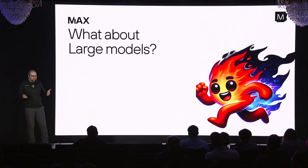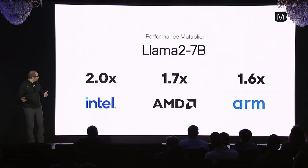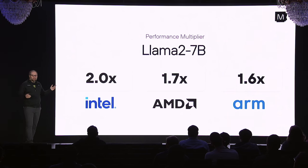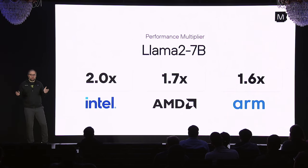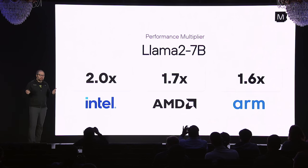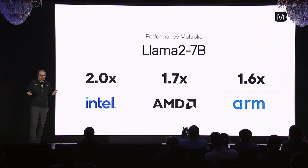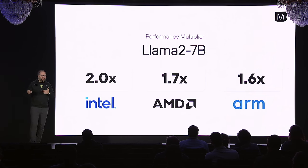You saw a bunch of results from large models. If we dig down deep into Llama 2, 7 billion parameters, we see huge compute multipliers: 2x on Intel, 1.6x on Arm, and so on. That means you save a lot of money in the process.